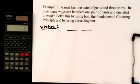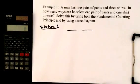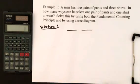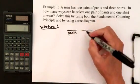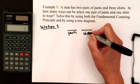And the first blank represents how many choices he has on the pair of pants. So underneath the first blank, I'm going to write pants. And underneath the second blank, that's the shirts.